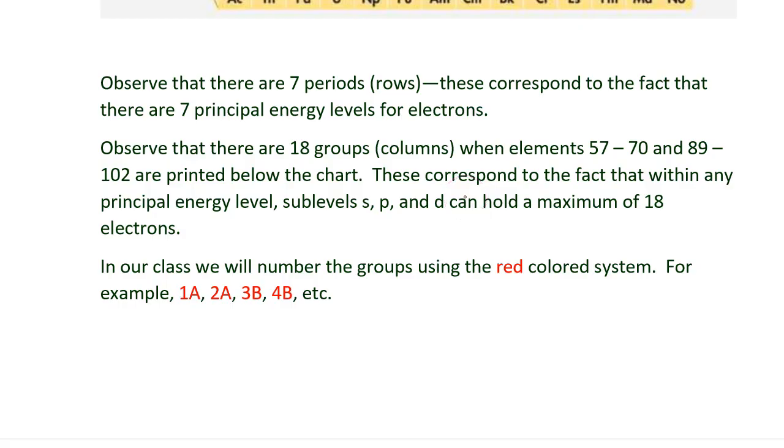Observe that there are 7 periods, which are the rows. These correspond to the fact that there are 7 principal energy levels for electrons. Observe that there are 18 groups, which are the columns, when those 28 elements are printed below the chart. The 18 groups corresponds to the fact that within a principal energy level, sublevels S, P, and D can hold a maximum of 18 electrons.